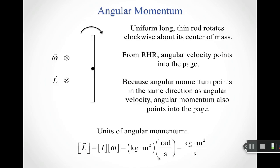Thinking about the units of angular momentum: the moment of inertia has units of kilogram meters squared, and angular speed has units of radians per second. Radians have the property of disappearing when we don't need them, and this is one of those situations. The radian goes away and we're left with kilogram meters squared per second — we don't write radians in the units of angular momentum.